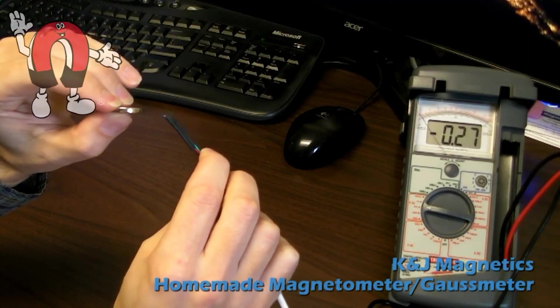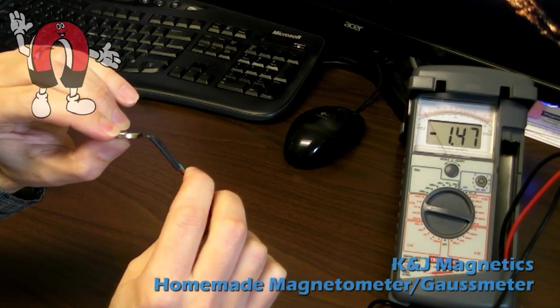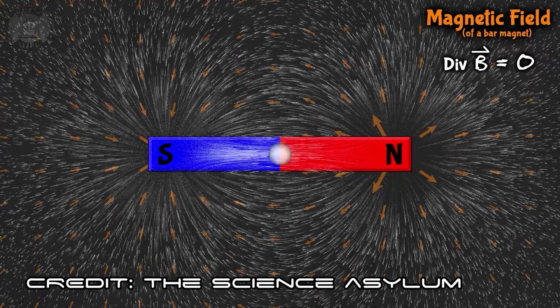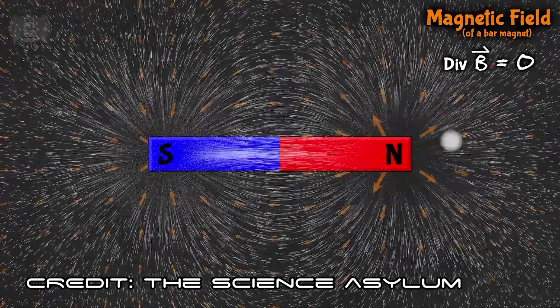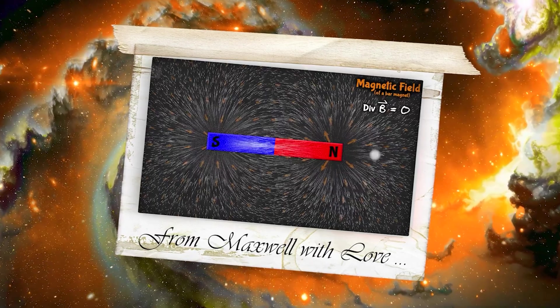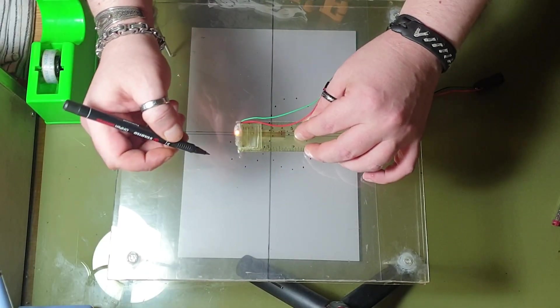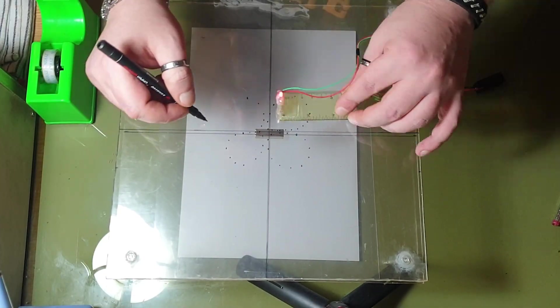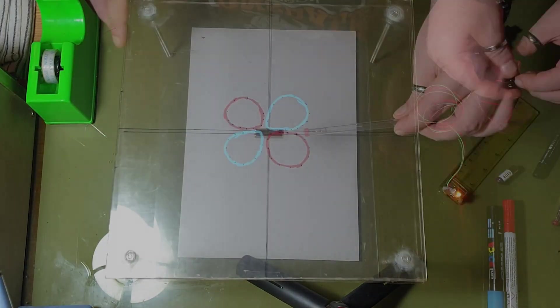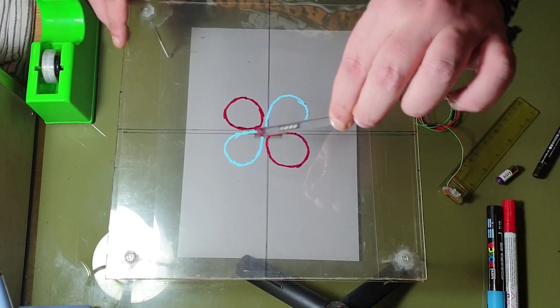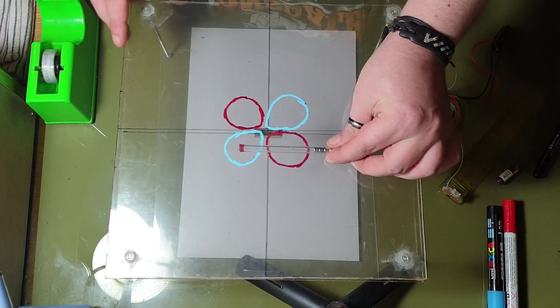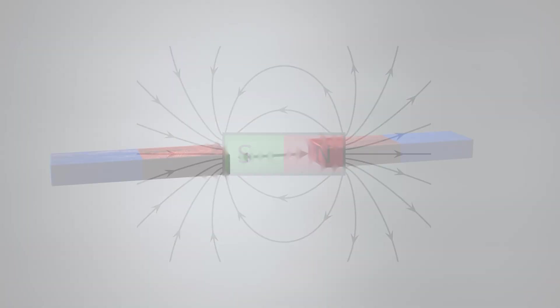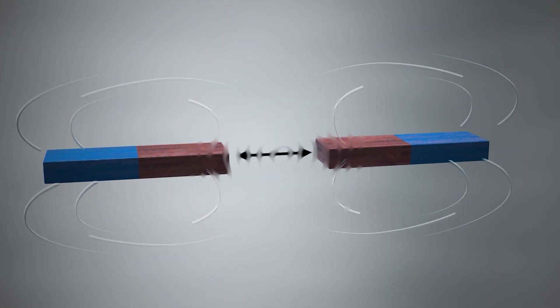When we measure a magnetic field with a traditional sensor, we've always been taught to believe we're observing the objective reality of the field. Maxwell describes a field, we measure it, and that measurement is supposedly a direct snapshot of reality. But in Marcio's experiments, things don't work that way at all. Why? Because the sensor itself, say a Hall sensor, is not a neutral observer. It is, in every sense, a small magnet. And like any magnet, it interacts with the system it's measuring. Which means that what we are tracing is not the field itself, but the form the field takes when it enters into a relationship with the second element.